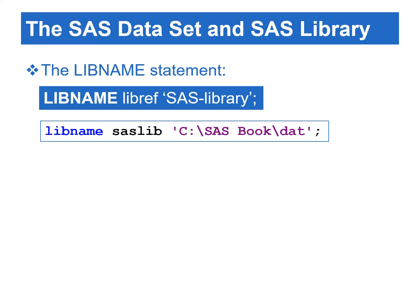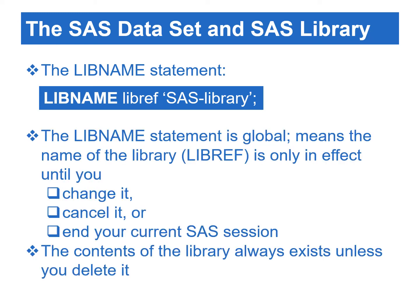For example, in this libname statement, the libref is SASlib. It is associated with the physical location that is enclosed in a pair of quotation marks. Libname is a global statement. A global statement can be placed outside the data or proc steps. Being global in this situation means that the name of the library, libref, is only in effect until you change it, cancel it, or terminate your current SAS session. The contents of the library always exist, unless you delete them.